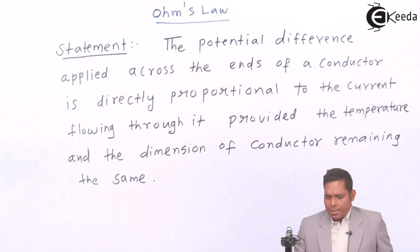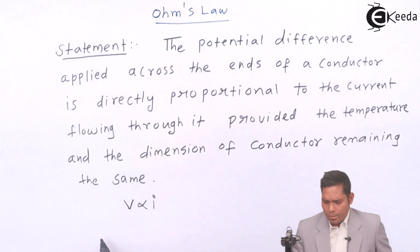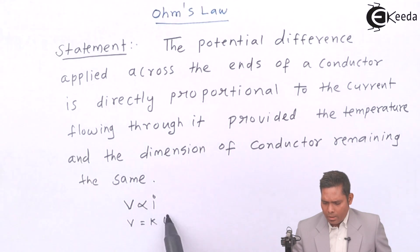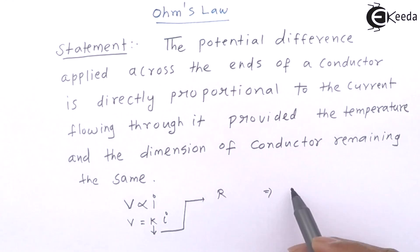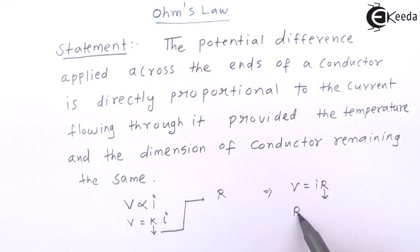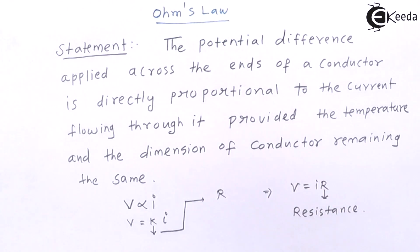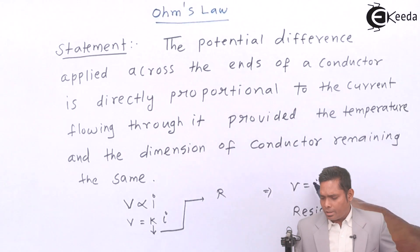So, V the potential difference is proportional to I, or V equals some constant R into I. This gives us V equals I times R, where R is called the resistance. V is the potential difference applied across the ends of the conductor, and I is the current flowing through it.